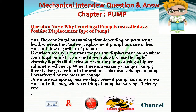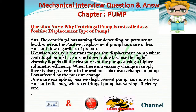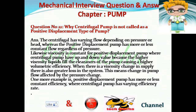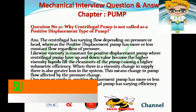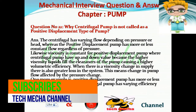Question number 21: Why is a centrifugal pump not called a positive displacement type of pump? Answer: The centrifugal pump has varying flow depending on pressure or head, whereas a positive displacement pump has more or less constant flow regardless of pressure. Viscosity is constant for a positive displacement pump, whereas a centrifugal pump has varying values because higher viscosity liquids fill the clearances of the pump causing higher volumetric efficiency. When there is a viscosity change in supply, there is also greater loss in the system, meaning pump flow is affected by pressure change.